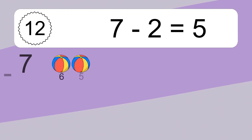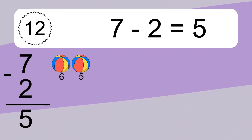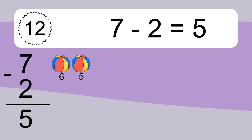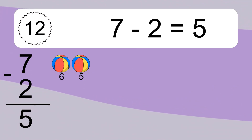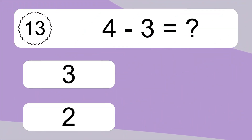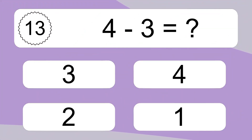7 minus 2 equals what? 7 minus 2 equals 5. Let's count it: 6, 5.